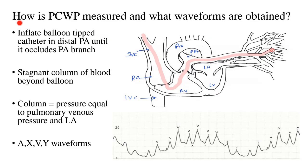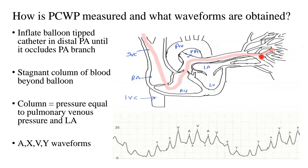The obvious question is: how is PCWP measured and what waveforms are obtained? Measurement of wedge pressure is done using a catheter known as the Swan-Ganz catheter. After entering the internal jugular vein, it enters the superior vena cava, then the right atrium, then the right ventricle, then the pulmonary artery, going all the way to the distal part of the pulmonary artery. All the various waveforms obtained in the RA, RV, and pulmonary artery are seen, but we're concerned with wedge pressure.